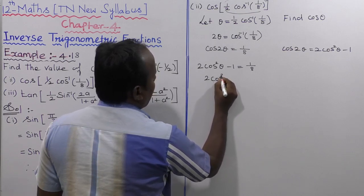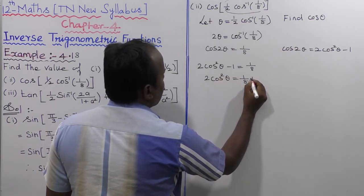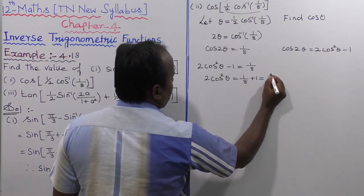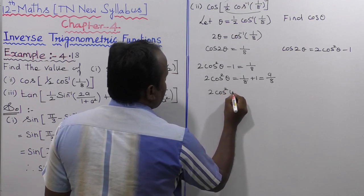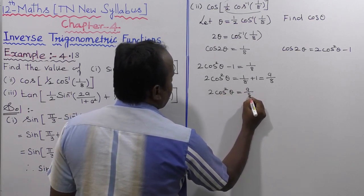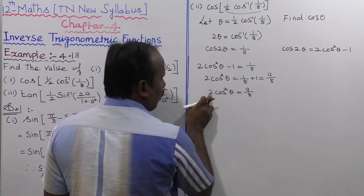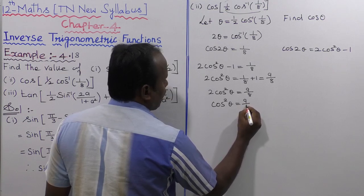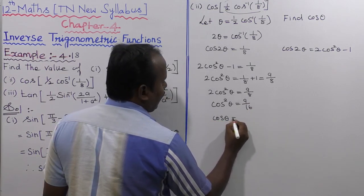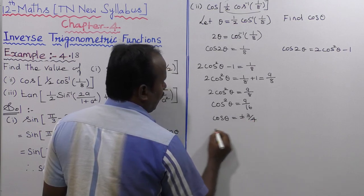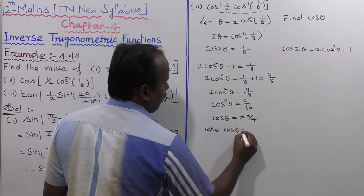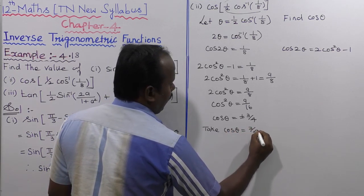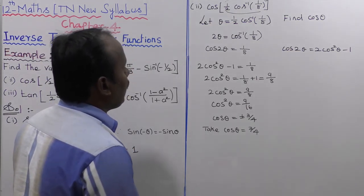So 2cos²θ = 1/8 + 1 = 9/8, giving cos²θ = 9/16. Therefore cos θ = ±3/4. Taking the positive value, cos θ = 3/4.